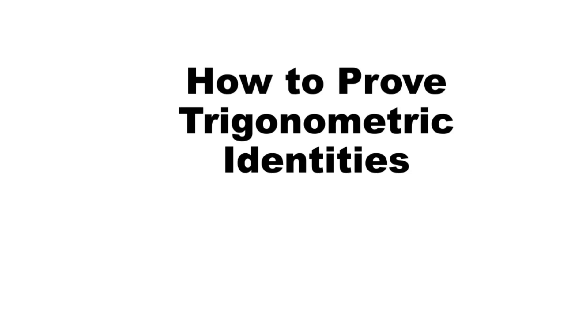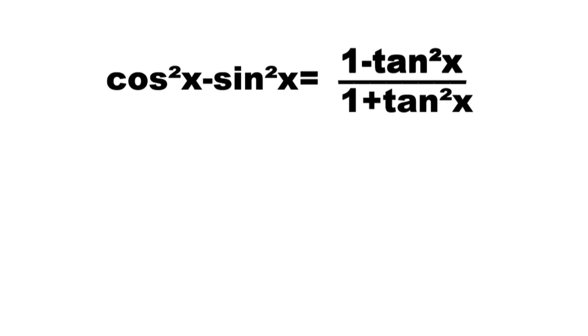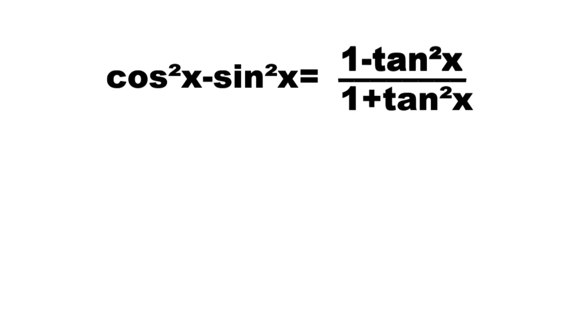How to prove trigonometric identities? Prove that cosine squared x minus sine squared x is equal to 1 minus tangent squared x over 1 plus tangent squared x.